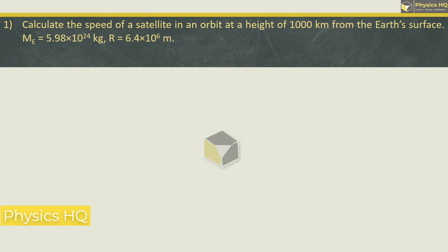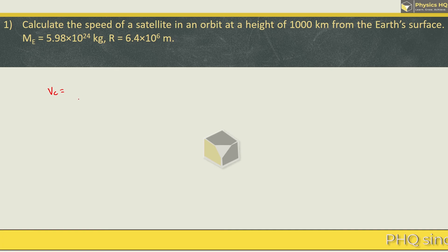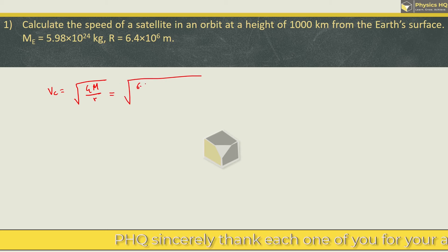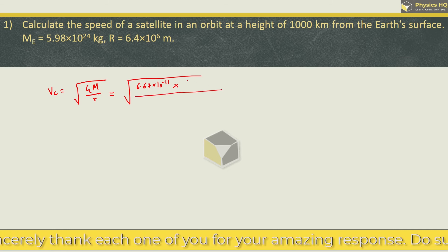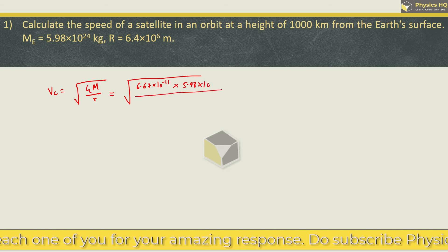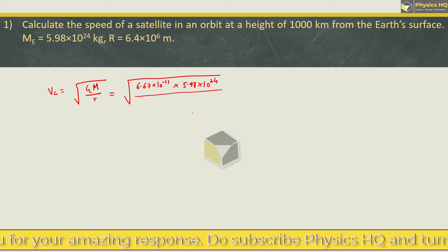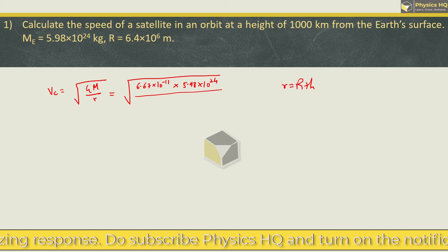Calculate the speed of a satellite in an orbit at a height of 1000 km from the Earth's surface. Mass of Earth is 5.98 × 10²⁴ kg, radius is 6.4 × 10⁶ m. Here we are talking about critical velocity. The satellite follows the Earth's circular path, and that is given by Vc = √(GM/r), where small r is capital R plus H.